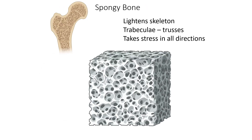Your skeleton is comprised mostly of spongy bone, not compact. If your skeleton were composed of compact bone, it would weigh too much for your muscles and they would not be strong enough to help you move your bones. Therefore, spongy bone serves to lighten the skeleton while still providing strength and support.